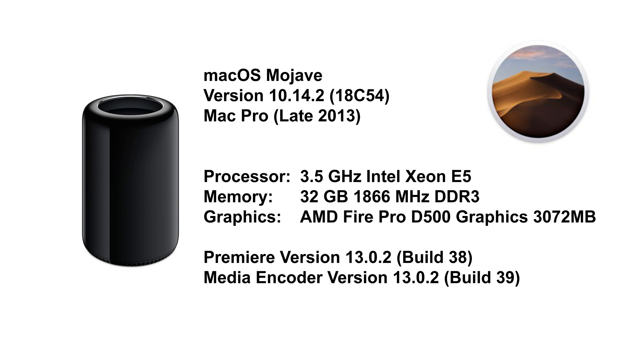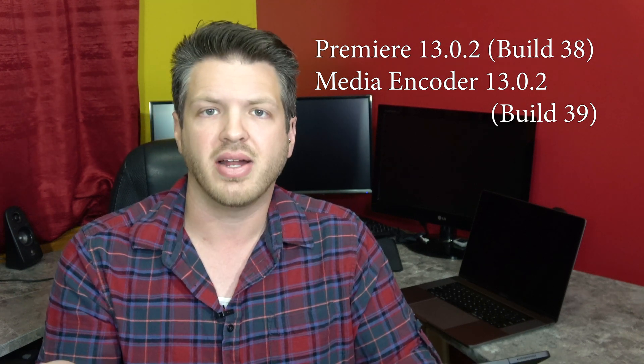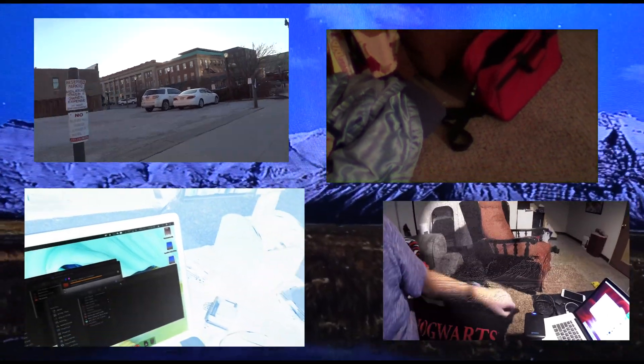That's six cores in this one. Memory is 32 gigabytes, 1866 megahertz DDR3 RAM — it is 2013 after all. Graphics are the AMD Fire Pro D500 with about three gigabytes of VRAM. Tested this using the most recent versions of Premiere and Media Encoder. So how did it perform? I used my killer 4K five-stream test that I always use. It seems to just tear the crap out of these machines — I didn't set out to make something that hard, but it just makes them chug.